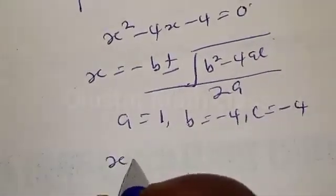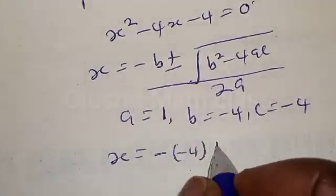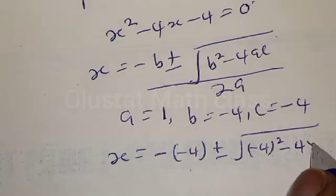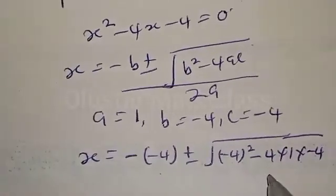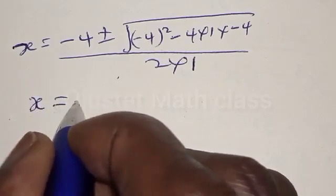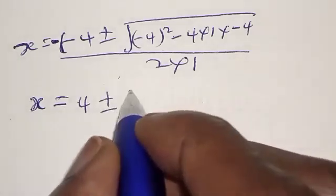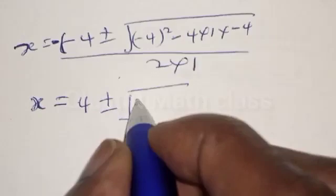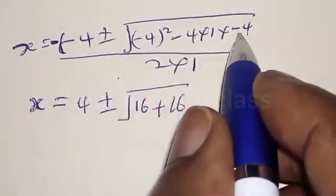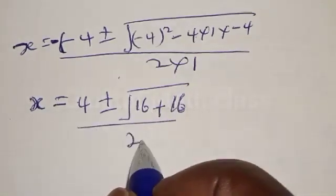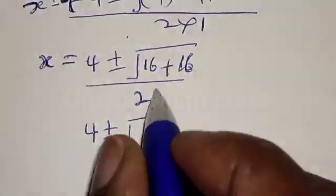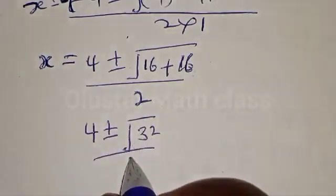Therefore our s is equal to: minus of minus 4, plus or minus square root of minus 4 squared minus 4 times 1 times minus 4, all over 2 times 1. That gives us 4 plus or minus square root of 16 plus 16, which is square root of 32, over 2.